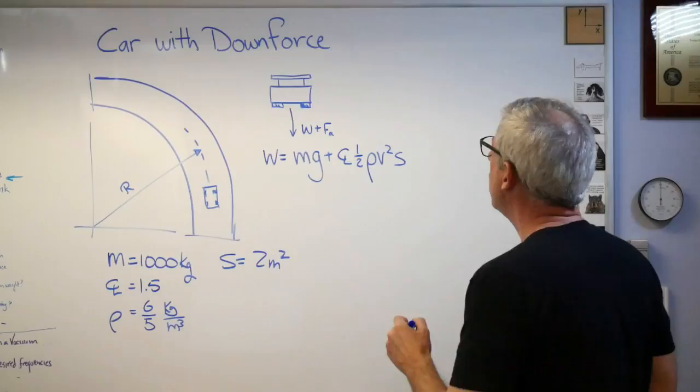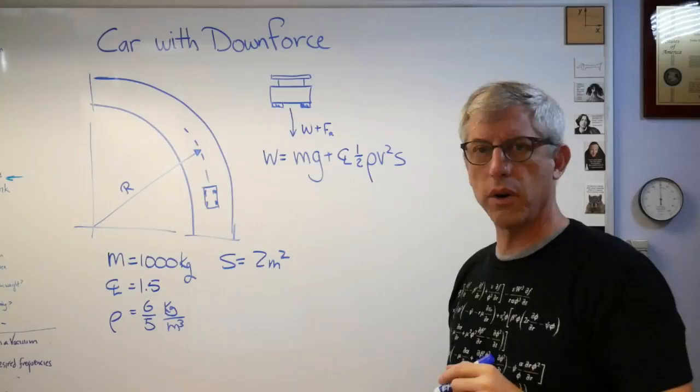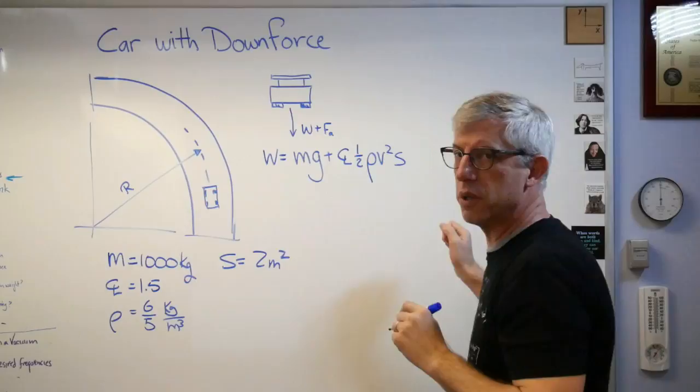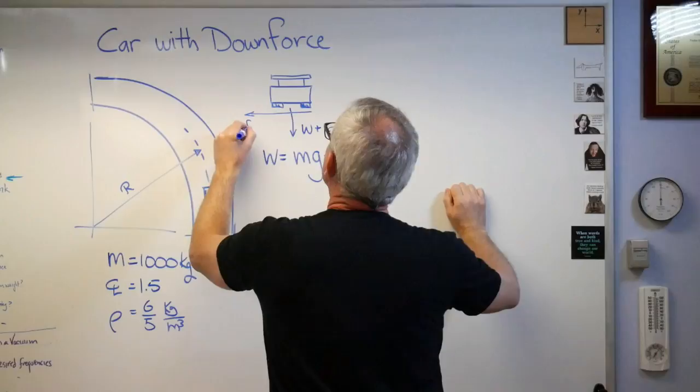We're going to have to use Newton's law. So Newton's law says that the sum of the forces equals MA. There's a force going that way, that's the friction force. Is there any force other than that that makes the car turn? Don't think so.